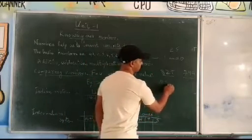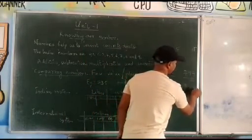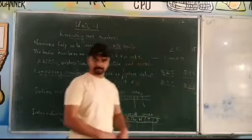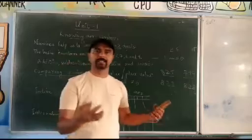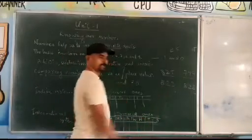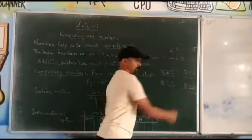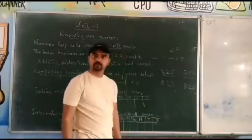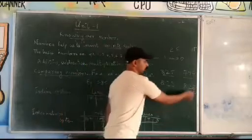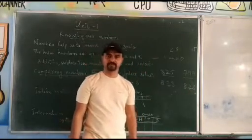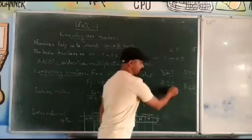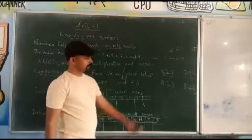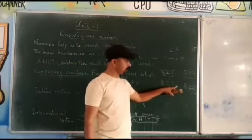Let me give one more example: 823 and 838. Both have 3 digits. First check hundreds: 8 hundreds and 8 hundreds — same, so not possible to decide yet. Move to tens: 2 tens (20) and 3 tens (30) — wait, both have 2 in the tens place, so still not possible. Then move to ones: 3 ones versus 8 ones. So 823 is smaller than 838.